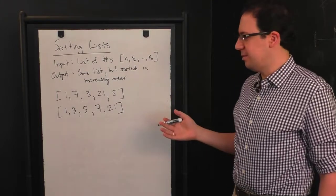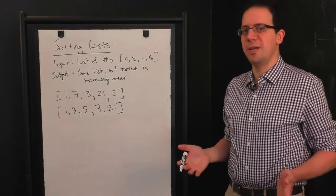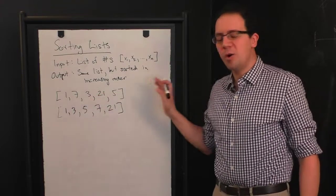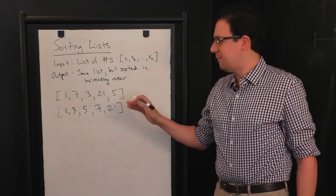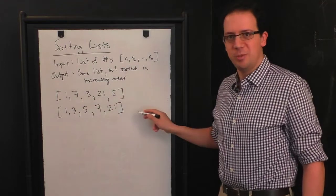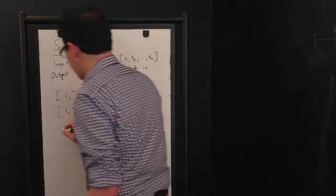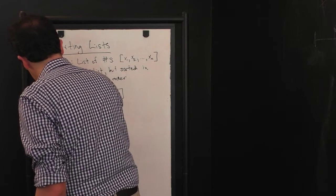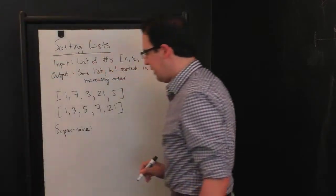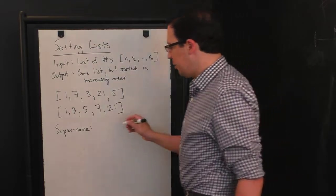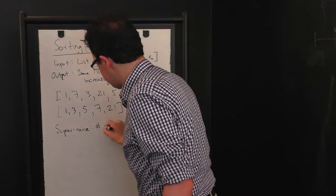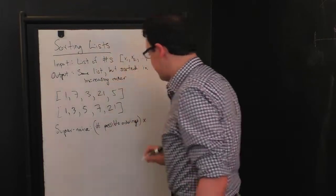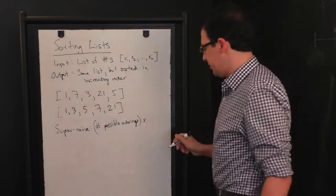The most naive algorithm, which is perhaps too naive, like no one would actually do this, is just try all possible orderings. And for each one check, did I actually put them in order? So this is, let's call this super naive. So the amount of time that the super naive algorithm takes is the number of possible orderings times the time it takes to check if a list is sorted.